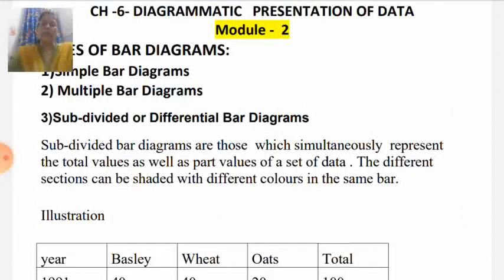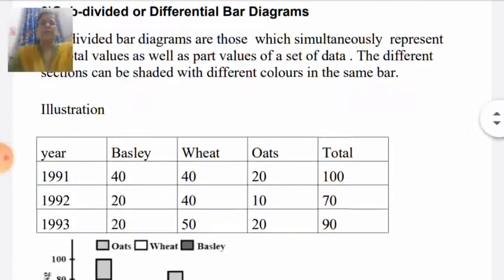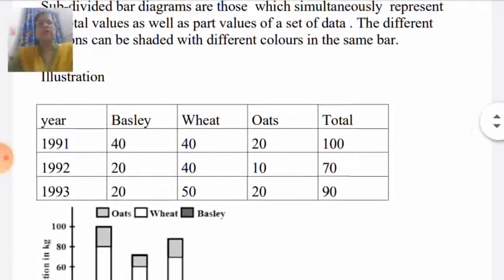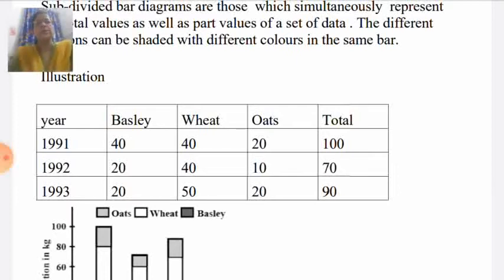You can see in this illustration we are having the total production of basile, wheat and oats. Total crop production is given as well as the different crops' production in different years. In 1991, basile production is 40 kg, wheat production is 40 kg, and oats production is 20 kg.